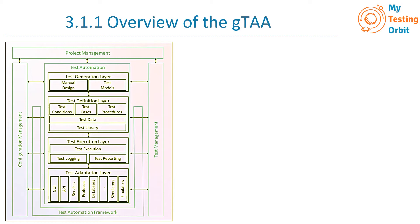According to this generic test automation architecture, a test automation framework may consist of the test adaptation, execution, and test definition layers. The test generation layer is part of the test automation platform but might not be part of the test automation framework, because it is usually seen as separate. In further sessions we will go through all these layers in much more detail, but today let's have an overview.